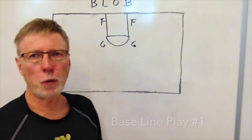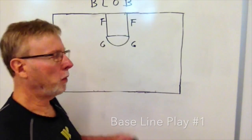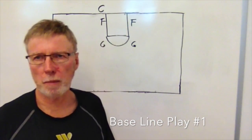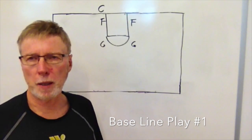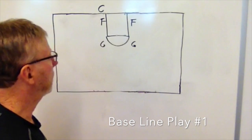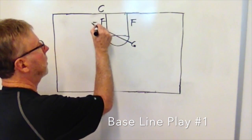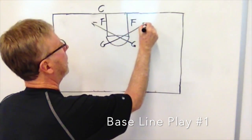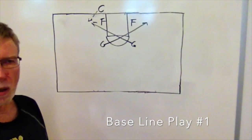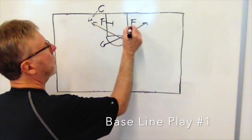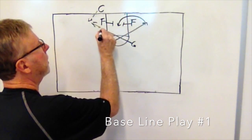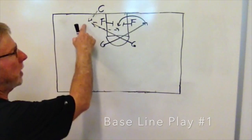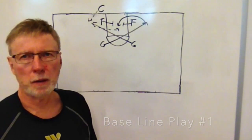For play number one, we line up with our two forwards on the block and our two guards at the free throw line extended. The center takes the ball out of bounds. When he slaps the ball, the guard on the opposite side breaks to try to receive the inbound pass. These two forwards pinch down, and the guard circles back around for the pass and shot. If he's open, that's an easy basket. If not, he brings the ball out to get into our offense.